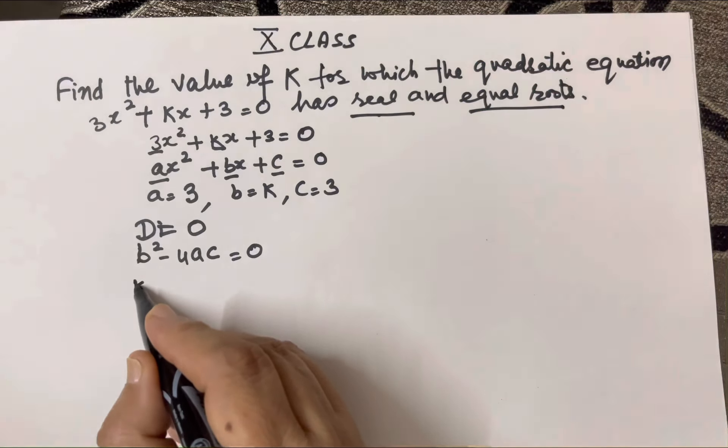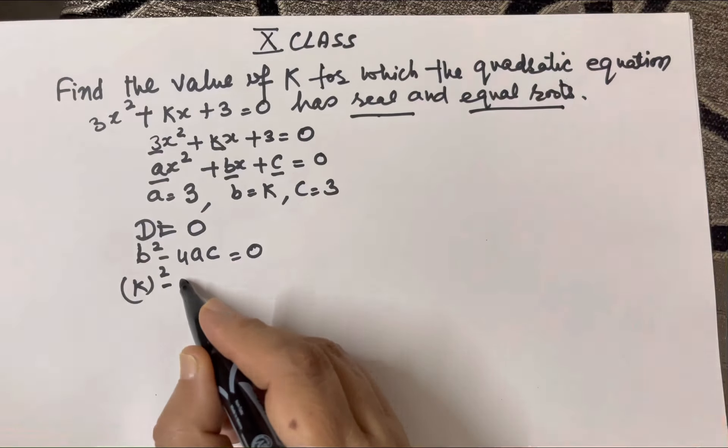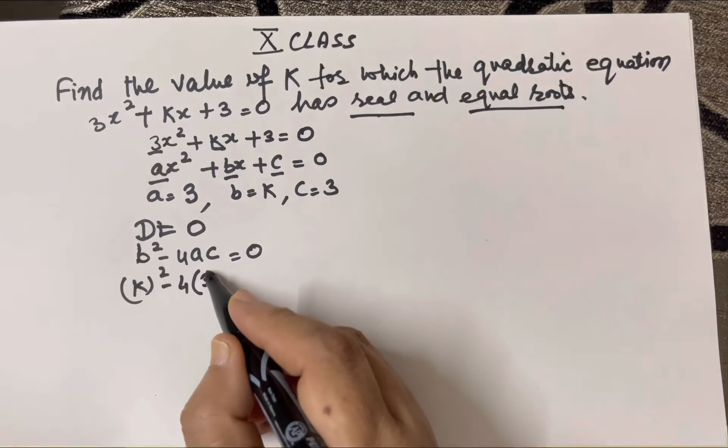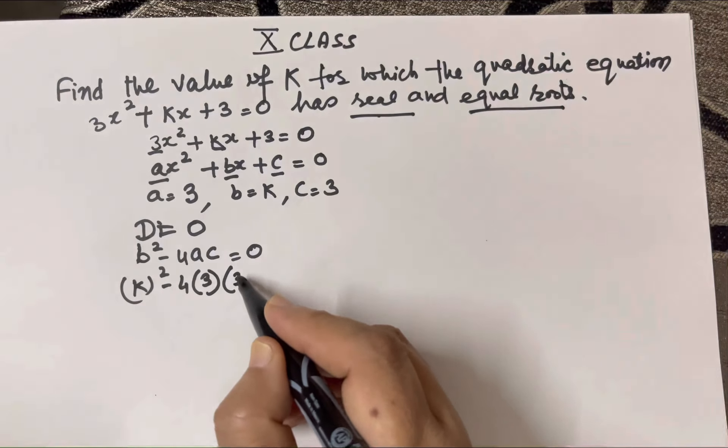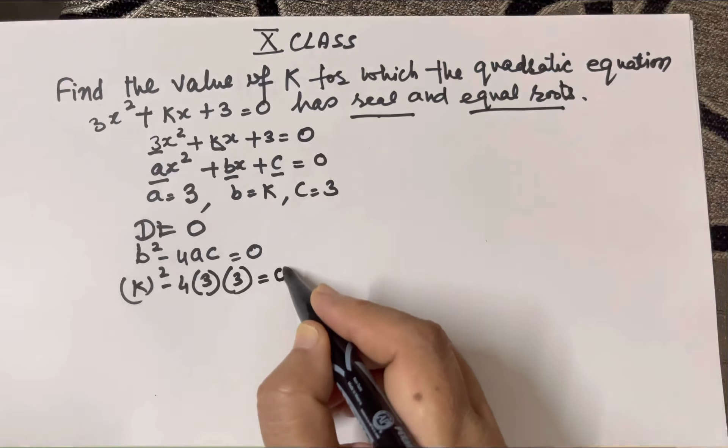What is b? It is k. So k² minus 4 times a times c equals 0. a is 3 and c is 3.